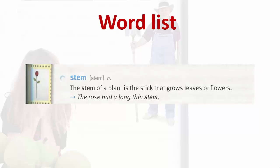Stem. The stem of a plant is the stick that grows leaves or flowers. The rose had a long thin stem.